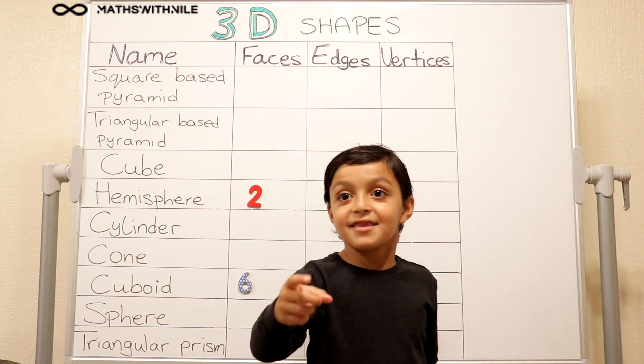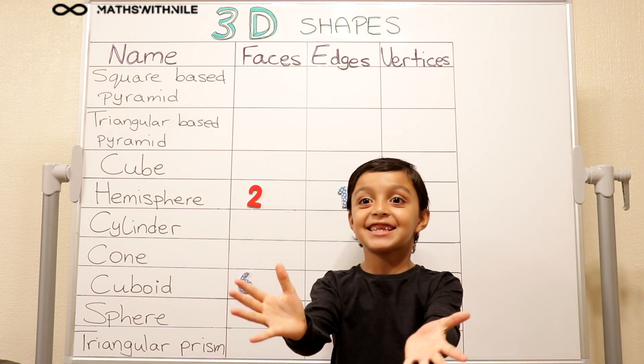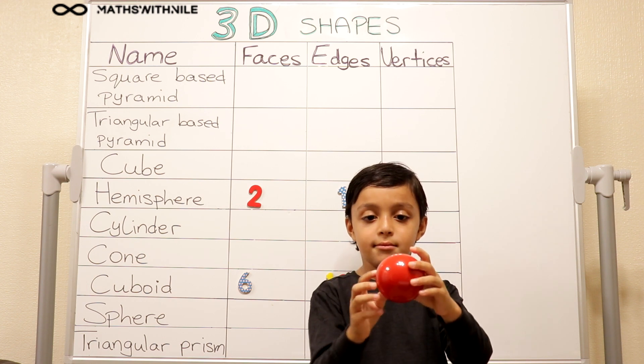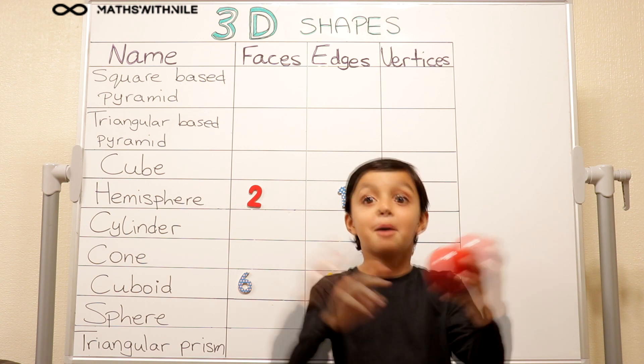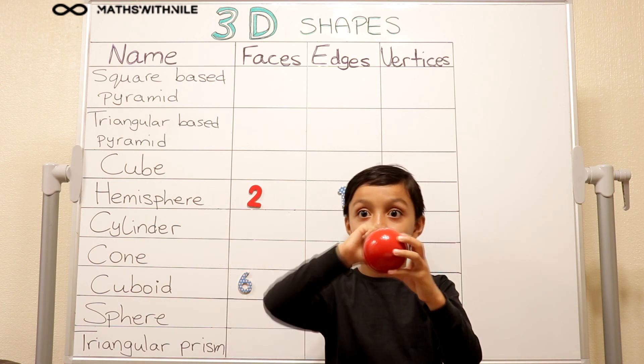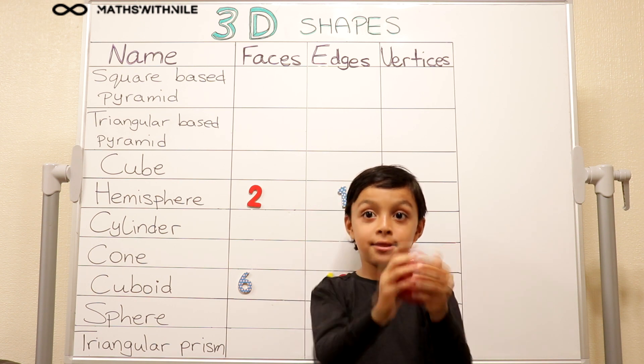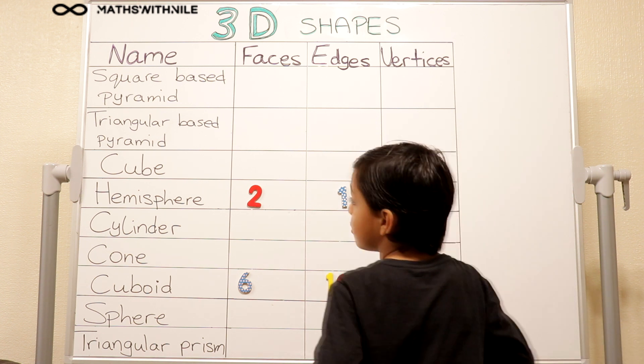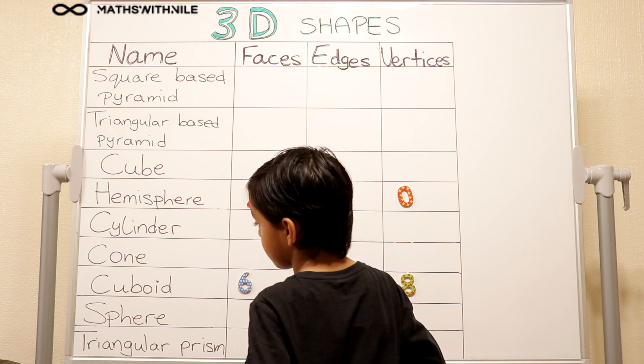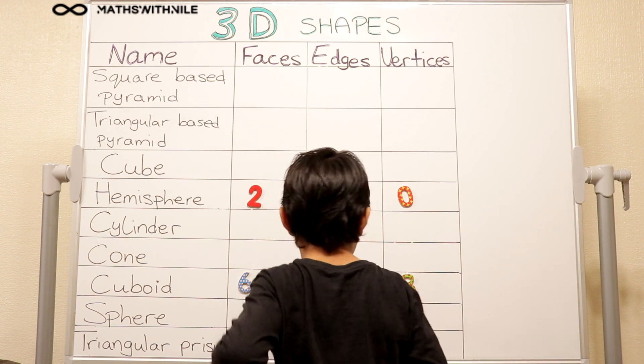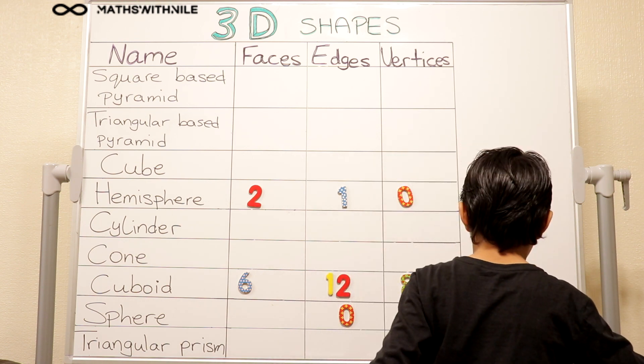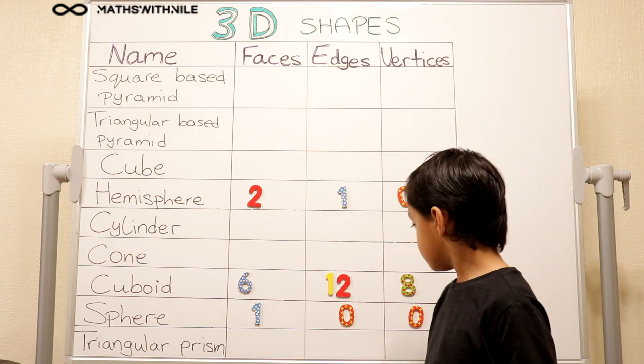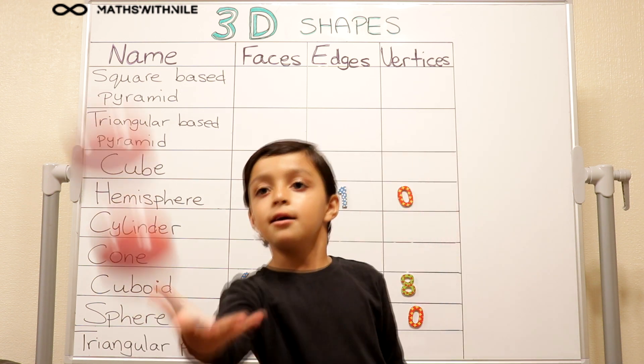Put that one down and because we did a hemisphere and a sphere came up. I've got something in my hand. It's called a sphere and I'm going to catch it. So that's our sphere. Let's hold it up. What does it remind you of? A ball! So it has one face, zero edges, zero vertices.